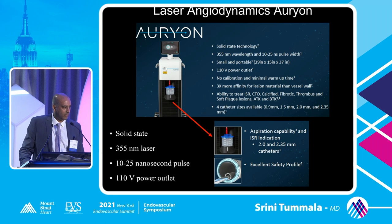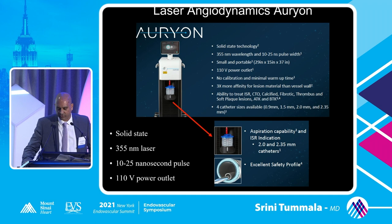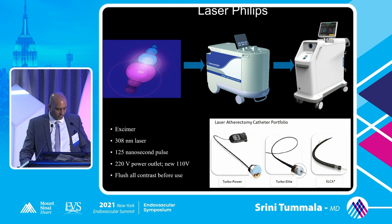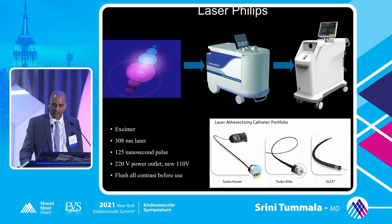The Angiodynamics laser has larger catheters at 2 mm and 2.35 mm with aspiration ability, which adds an important capability while using the device. The other system is the Philips XMR laser — a 308 nanometer laser with a shorter wavelength and longer pulse width. It requires a 220-volt connection, unlike the Angiodynamics which runs on 110 volts and plugs into a regular outlet.